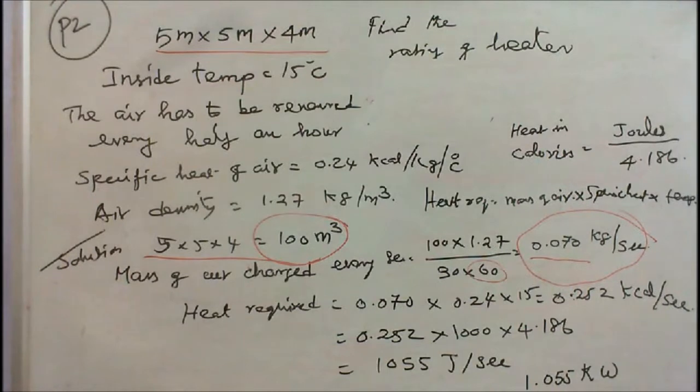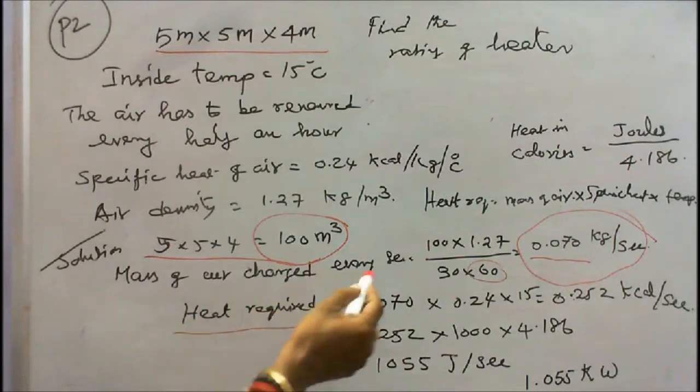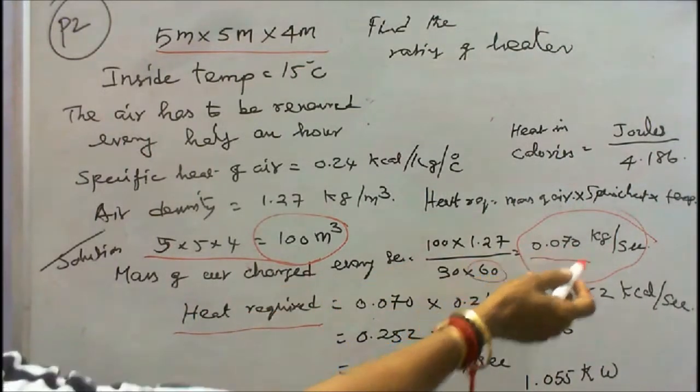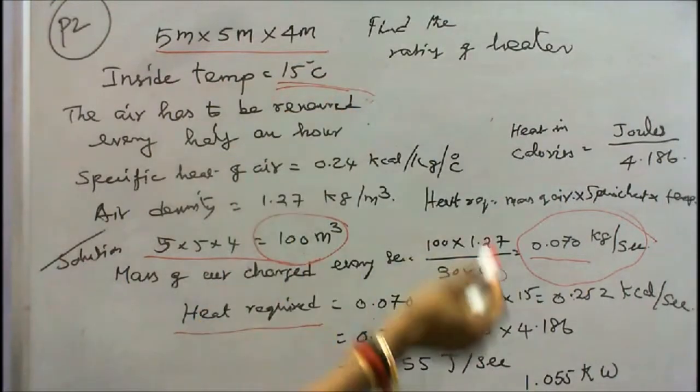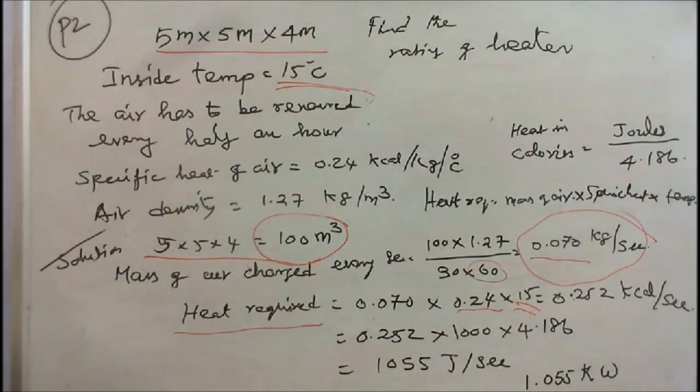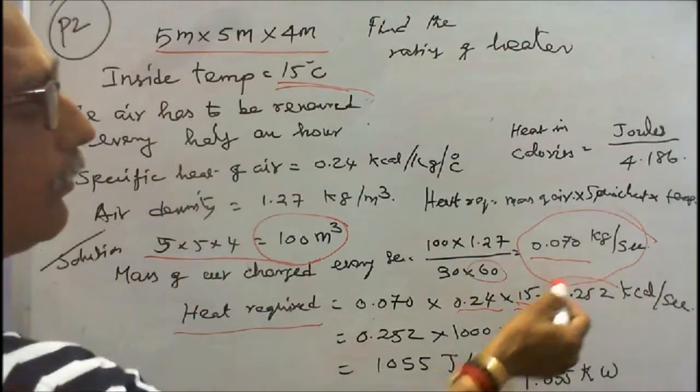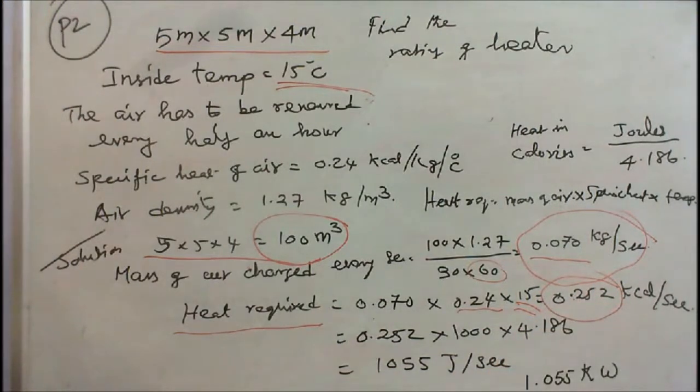Then heat required equals mass of air charged every second, 0.070, times specific heat of air 0.24, into temperature 15 degrees centigrade. So we get 0.252 kilocalories per second.